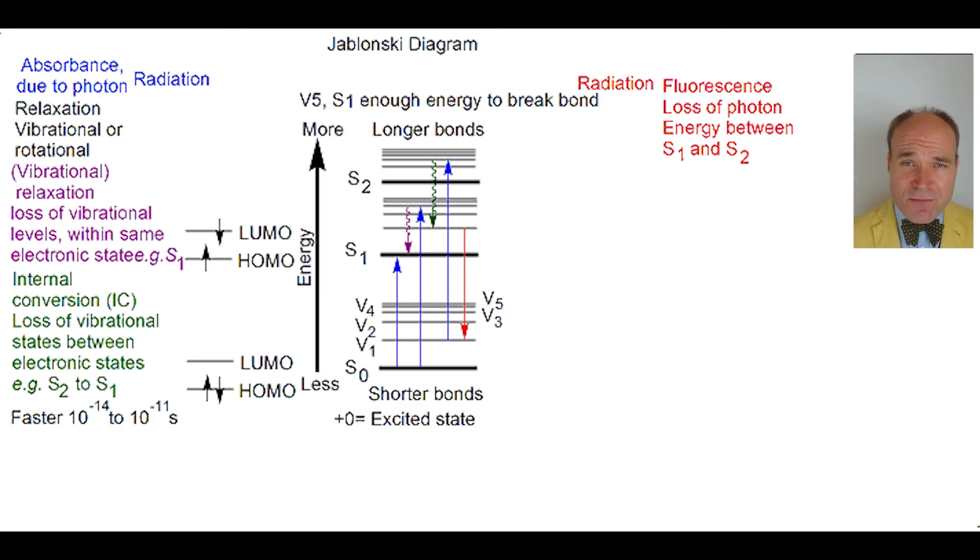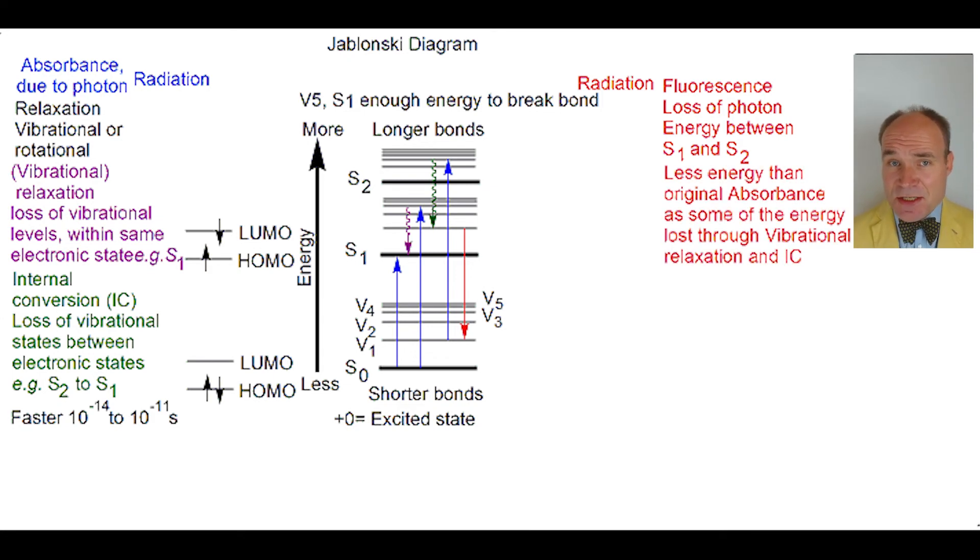Fluorescence radiation is of less energy than the original absorbance radiation, as some of the energy gained through absorbance is lost by different methods, such as vibrational relaxation and internal conversion. Fluorescence is a slower process, between 10^-9 and 10^-7 seconds.